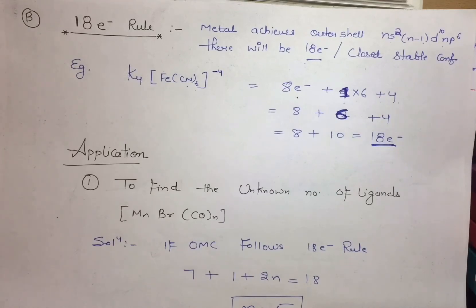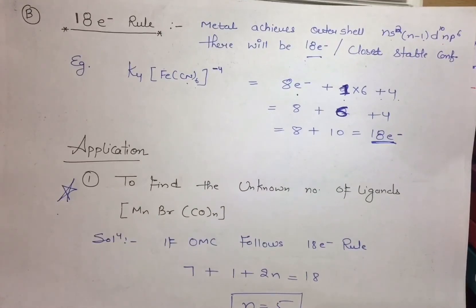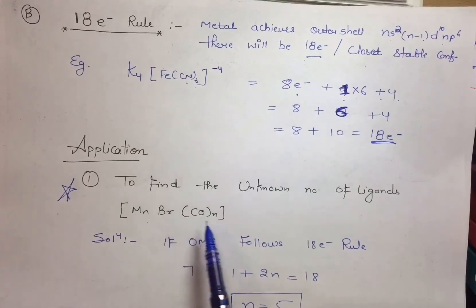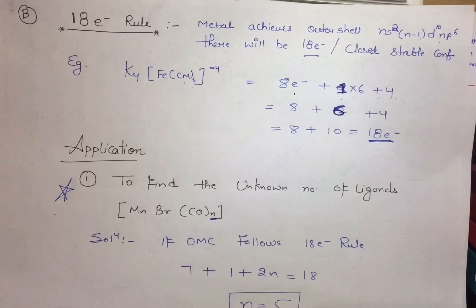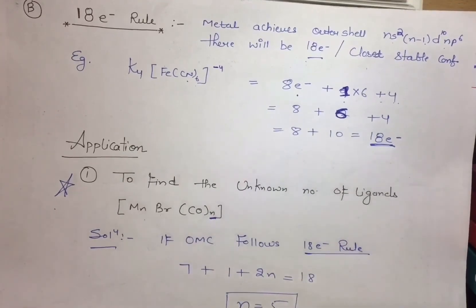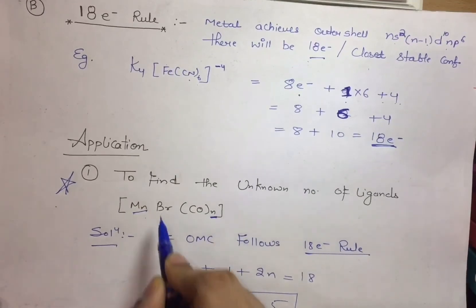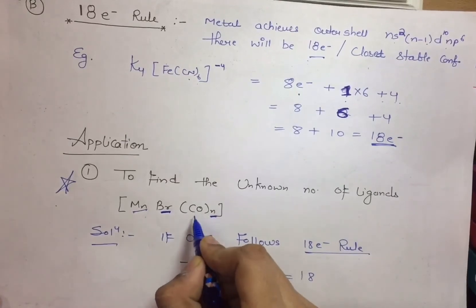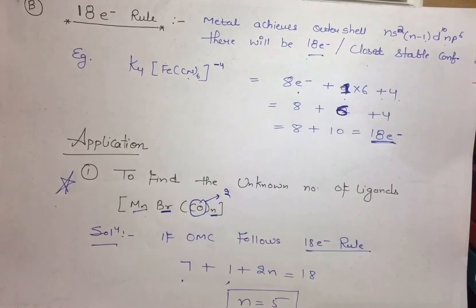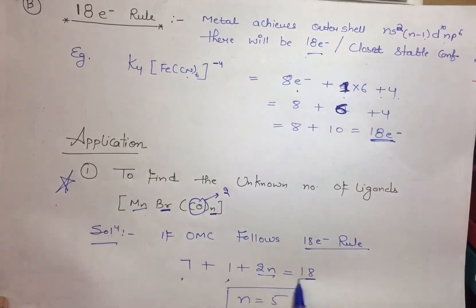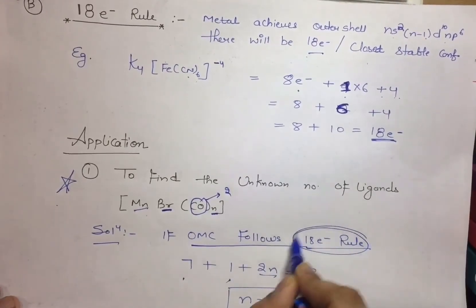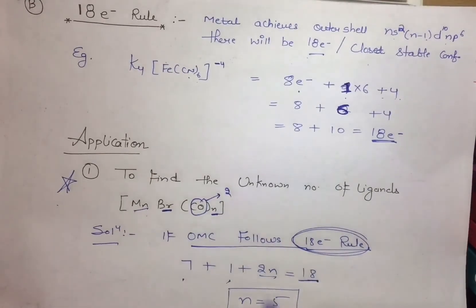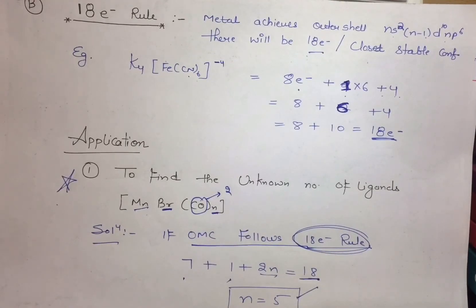The most important application in exams is finding the unknown number of ligands. For example, with MgBrCO: magnesium has 7 electrons in the outer shell, bromine contributes 1 electron, and each CO contributes 2 electrons. Setting up: 7 + 1 + 2n = 18 (since this OMC follows the 18-electron rule), we solve and get n = 5. So there are 5 CO ligands.